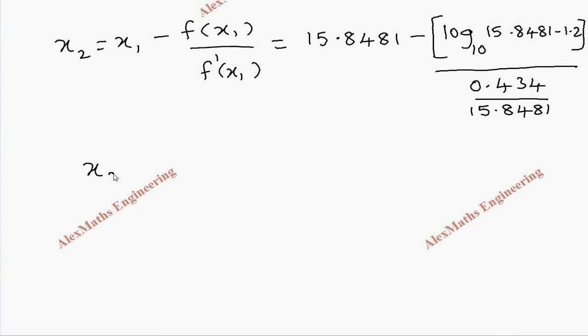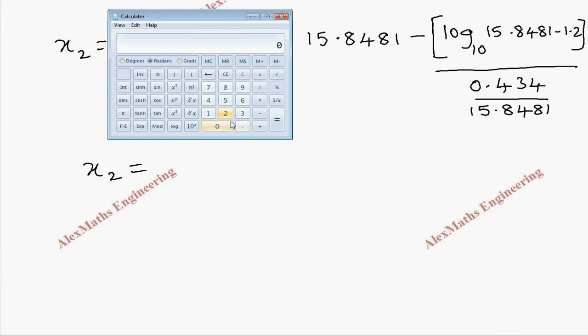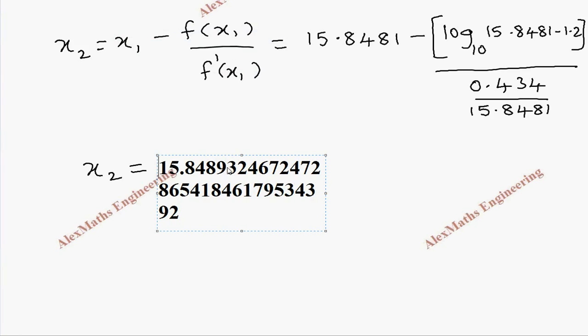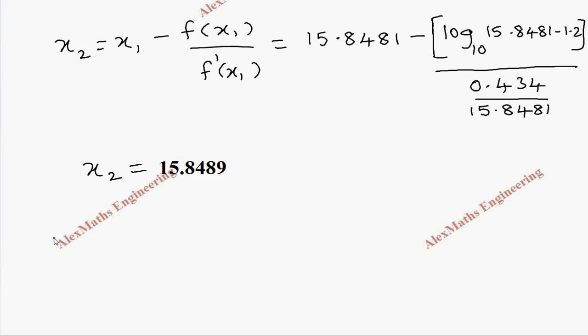Once again, we take the calculator and evaluate this. So we have 15.8481, log of that minus 1.2, then this division: open bracket 0.434 divided by 15.8481, bracket close, and minus of this 15.8481. I have done the reverse of this, so ignoring the minus sign, I will take the positive value, rounding up to four decimal places. So we got 15.8489.